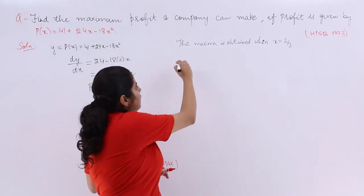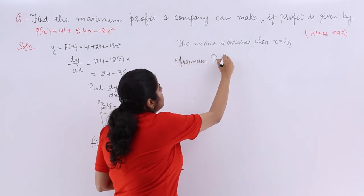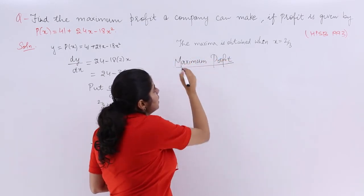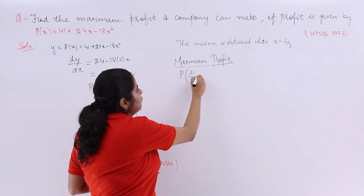So the maximum profit that you have to find out - only then you will fetch all of the marks. So the maximum profit is what? Maximum profit = P(x).